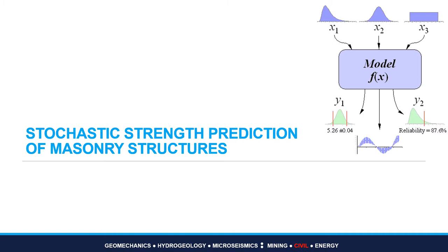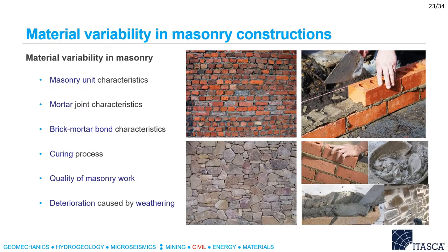The third example relates to the stochastic strength prediction of masonry structures. Several computational models exist to predict the mechanical behavior of masonry structures subjected to external loading, but these require input of material parameters. Masonry material properties are characterized by inherent variability due to composition and quality of materials, workmanship, curing effects, and weathering. However, today engineers typically assign the same material properties throughout the structure. In this research, we propose a DEM model for masonry that considers the stochastic variability of material properties and investigates how these affect the load carrying capacity of masonry structures.